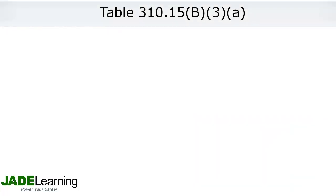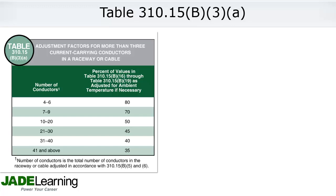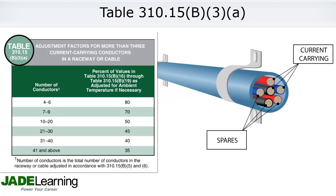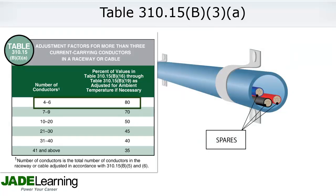If a raceway or cable has more than three current-carrying conductors, the adjustment factors in table 310.15(B)(3)(A) must be used. In 2014, spare conductors must be counted as well as energized conductors. In the conduit shown, we would use the row in the table for four to six conductors, even though three of the conductors are spares.